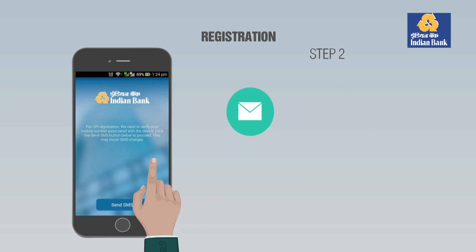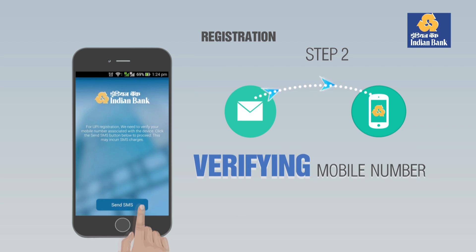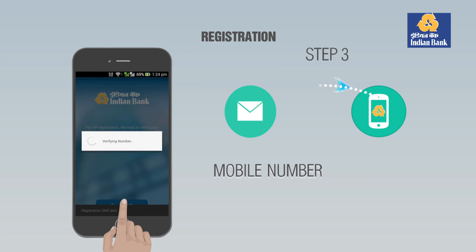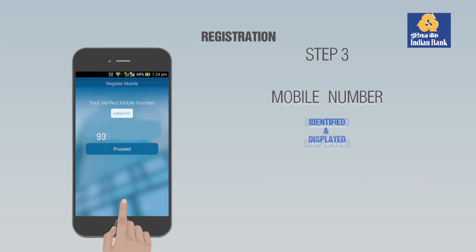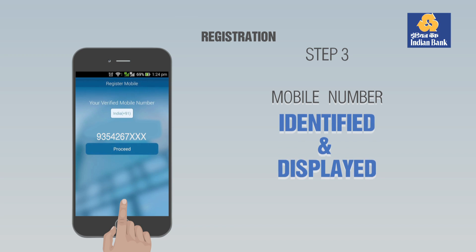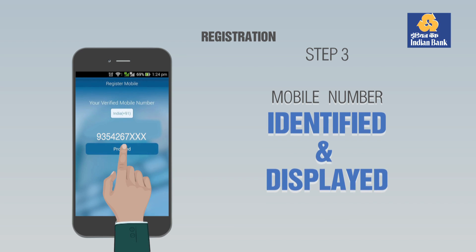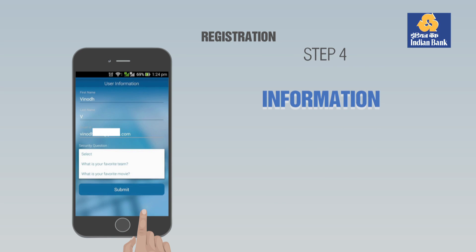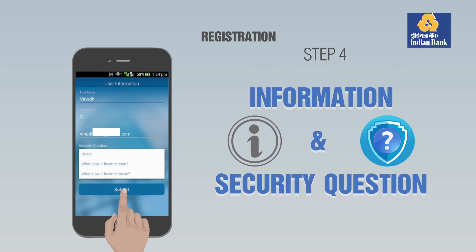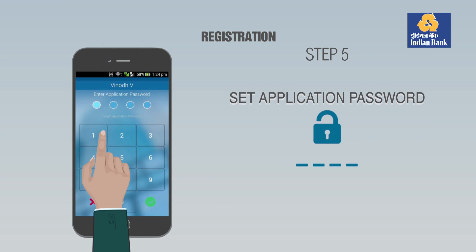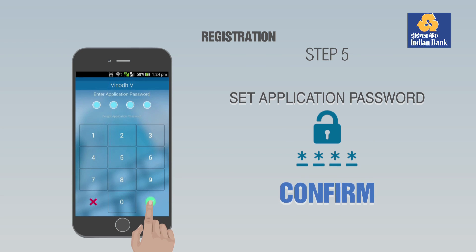Step 2: An SMS from the app is initiated to verify the mobile number. Step 3: SMS is sent and the mobile number gets verified. The mobile number available in SIM slot 1 is identified and displayed for confirmation. Step 4: Please enter your information and set a security question.